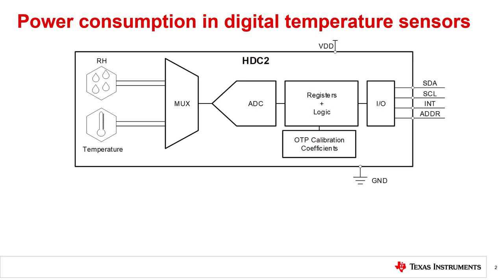On this slide is the functional block diagram for any sensor in the HTCII family. The capacitive-based RH and transistor-based internal temperature sensors are multiplexed and sampled by the internal ADC of the device. This value is then adjusted for accuracy by the sensor's internal logic and stored as a register value that is accessible through the digital IO, in this case I2C, of the device.